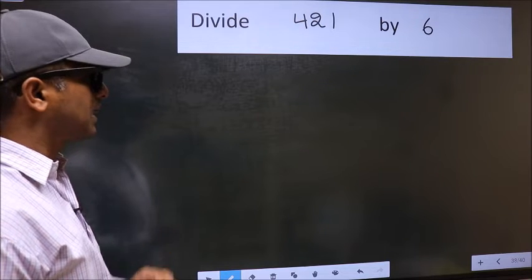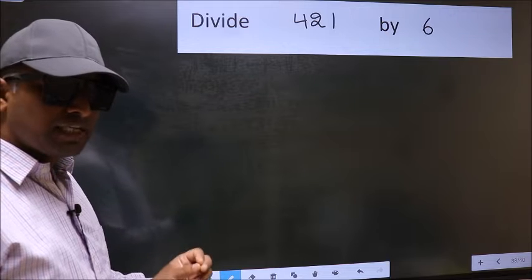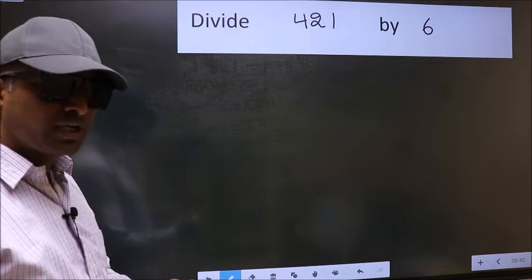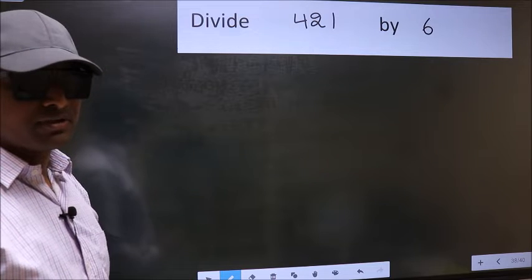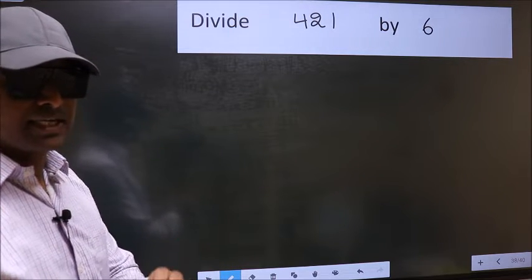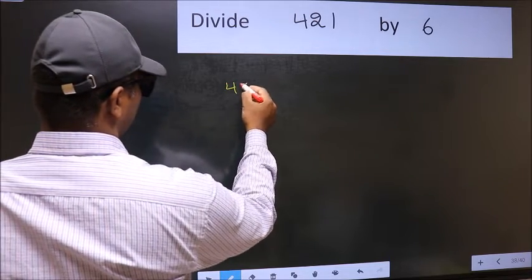Divide 421 by 6. While doing this division, many do this mistake. What is the mistake that they do? I will let you know, but before that we should frame it in this way: 421 and 6 here. This is your step one.